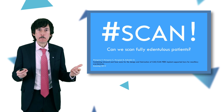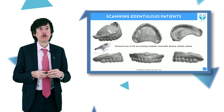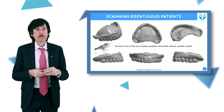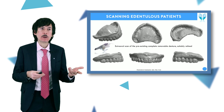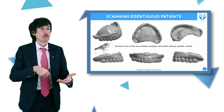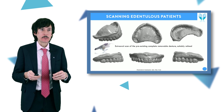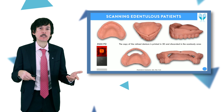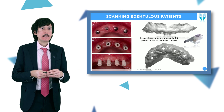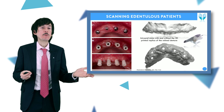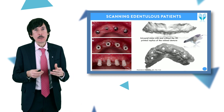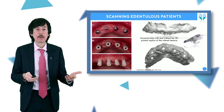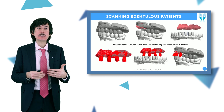Can we scan fully edentulous patients with these powerful scanners? I would say yes, it is possible, at least with four implants. Our protocol: the patient comes with their previous removable denture, we reline this denture intraorally, then remove it and scan the denture extraorally with the intraoral scanner. We print a replica of this denture with a 3D printer and cut out the area of the implant scan bodies. Then we take the intraoral impression without and with the scan bodies, without and with this replica in position. The replica helps us to have an accurate scan, maintain references, preserve the vertical dimension of occlusion, and keep all files in the correct reciprocal position for the computer assisted design phase.